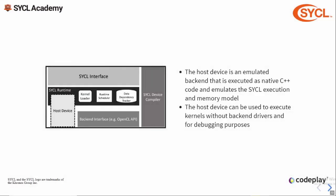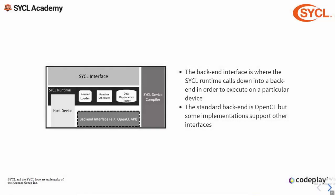Next is the host device — an emulated SYCL device which guarantees the same execution and memory model as a regular SYCL device, but runs natively in the SYCL runtime. The host device can be used as a fallback and to debug kernel functions. Next up we have the backend API, such as OpenCL, that sits underneath the runtime and performs any commands enqueued to it for a particular device. The standard backend for SYCL 1.2.1 is OpenCL, but some implementations support other backends.